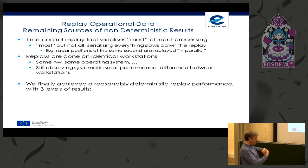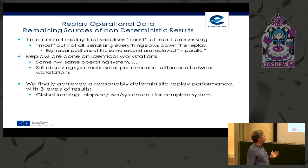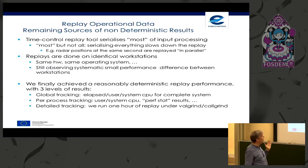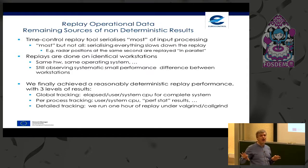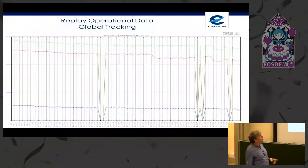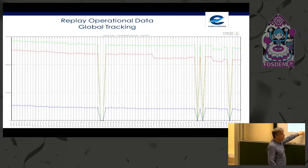With all these caveats and what we did, we finally achieved a reasonably deterministic replay performance with three levels of results. We have global tracking — elapsed, user, and system CPU for a complete replay. We do per-process tracking — user and system CPU and some per-stats recording. And we have detailed tracking — we run one hour of replay under Valgrind Callgrind, which takes 26 hours but is very precise.